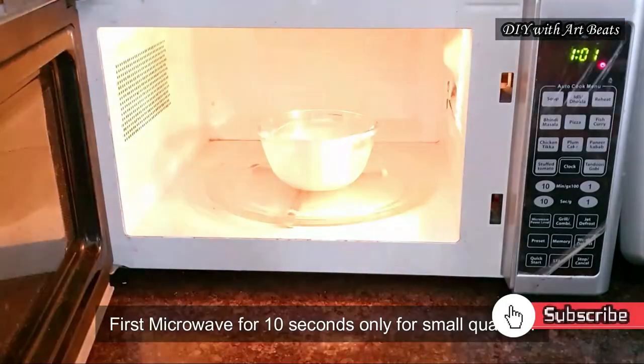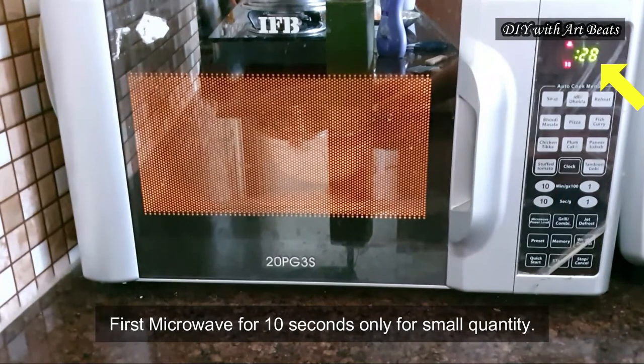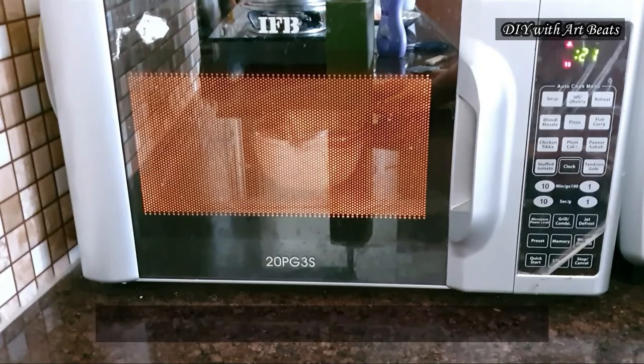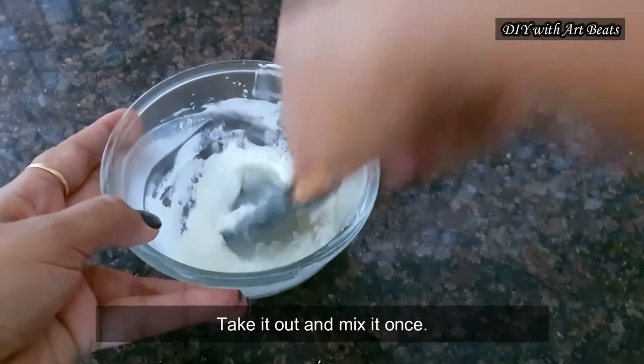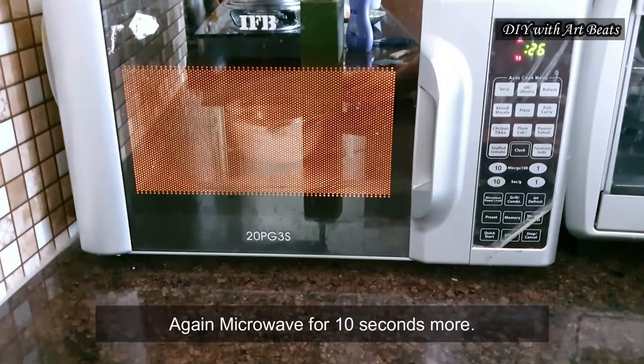Now keep it in the microwave and first cook it for 10 to 15 seconds only. After 10 seconds I am taking it out and mixing it properly so that there are no lumps here. And now again I am going to microwave it for 10 more seconds.